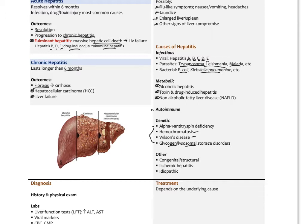There can be congenital causes, for example lack of formation of the biliary ducts. Ischemic hepatitis from blockage of arterial blood flow into, or potentially the portal flow, but usually arterial flow into the liver. And then of course idiopathic.